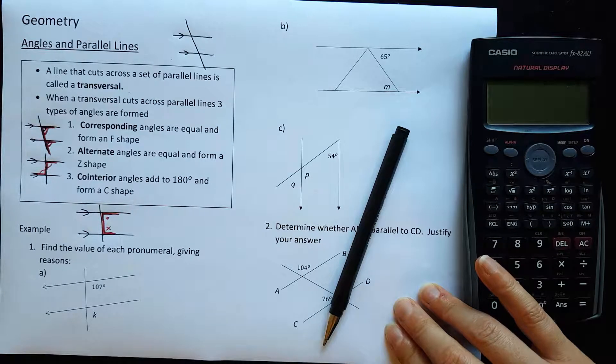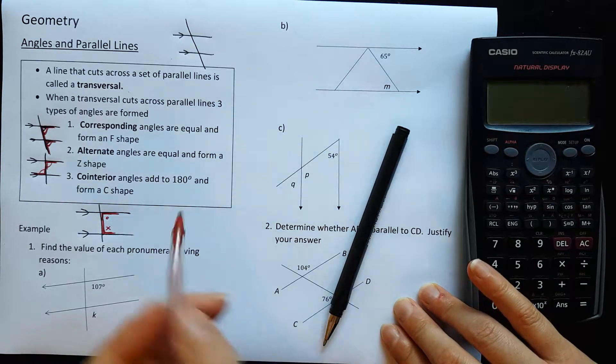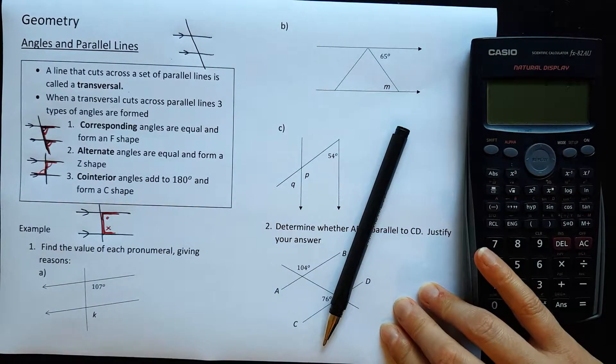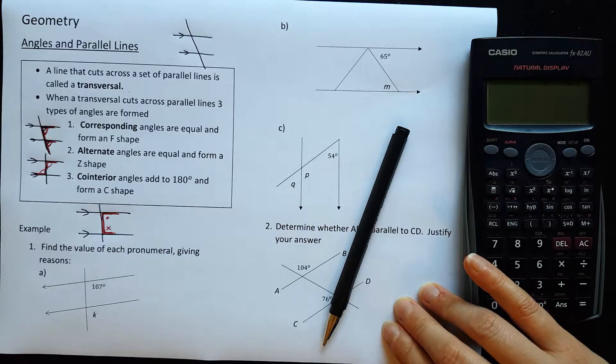But notice I've given them different symbols because these angles are not equal. They add up to 180 degrees. So those are the three rules that you need to know for parallel lines.